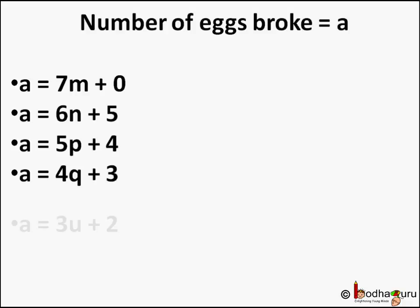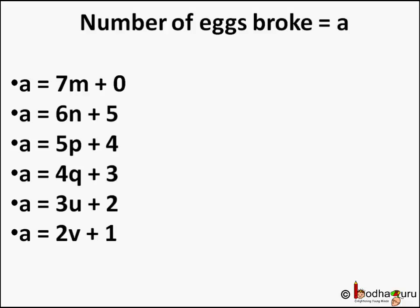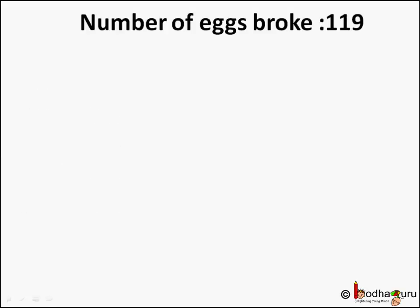So we represented what the trader said in simple equations. The correct answer was 119 eggs were broken. The trader was compensated for 119 eggs. So a is equal to 119.